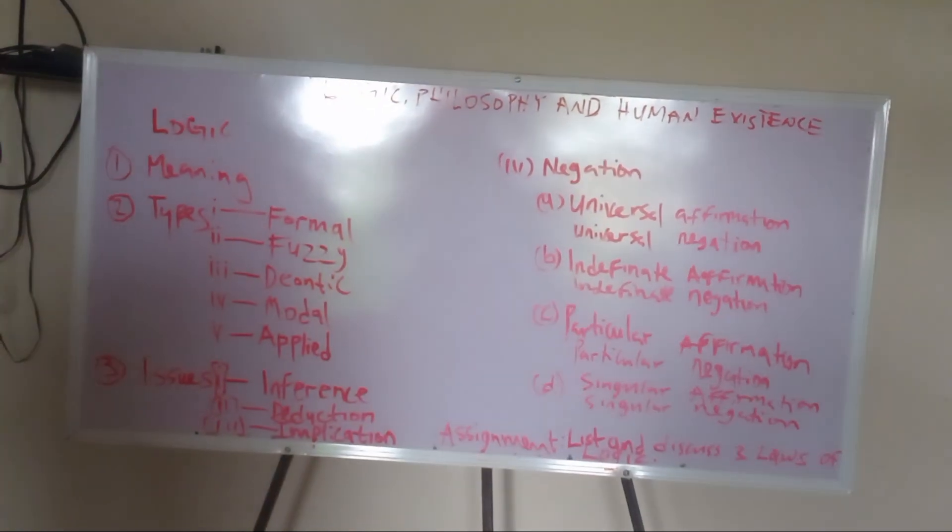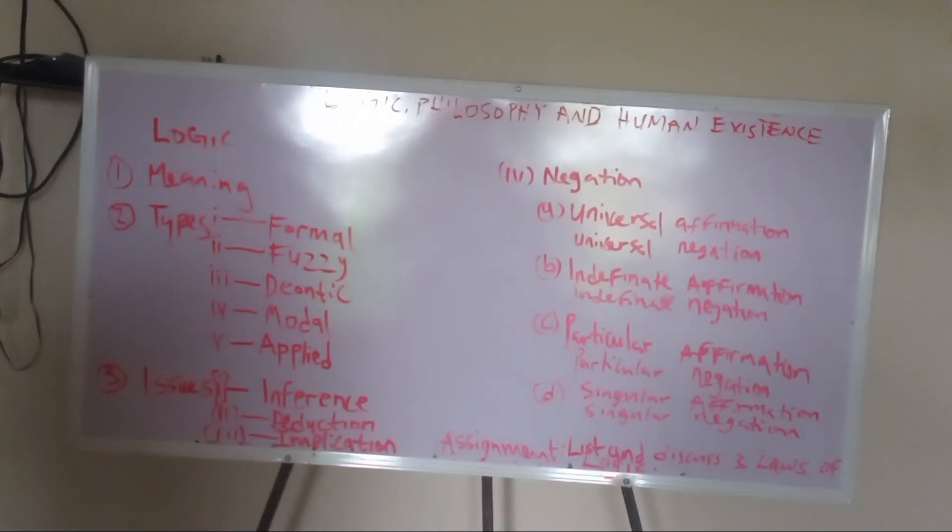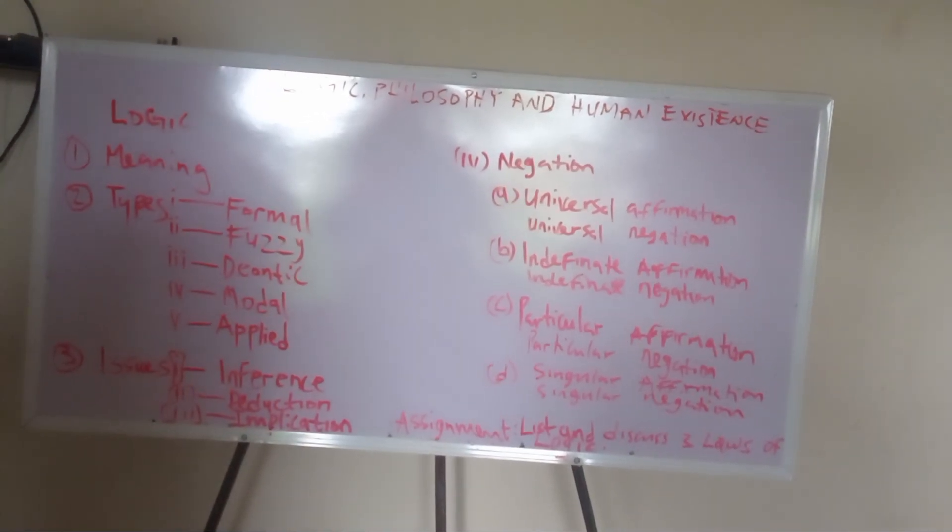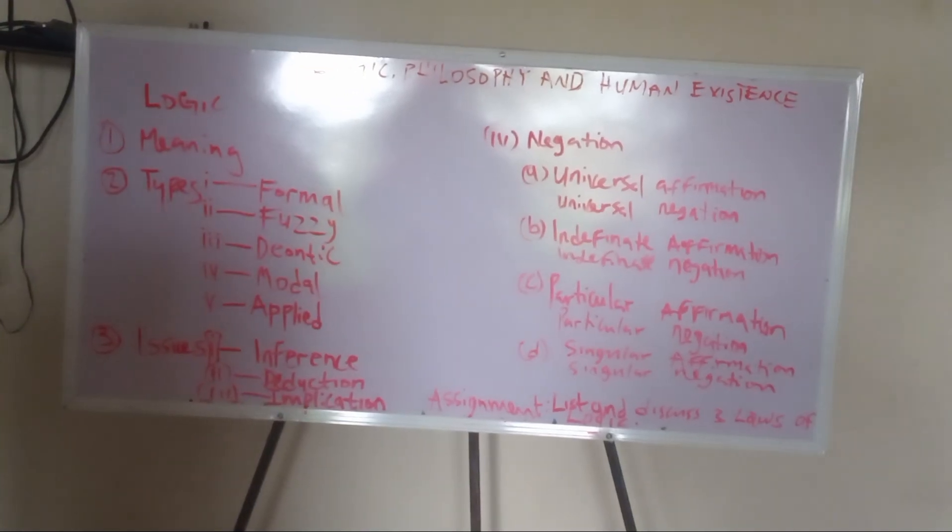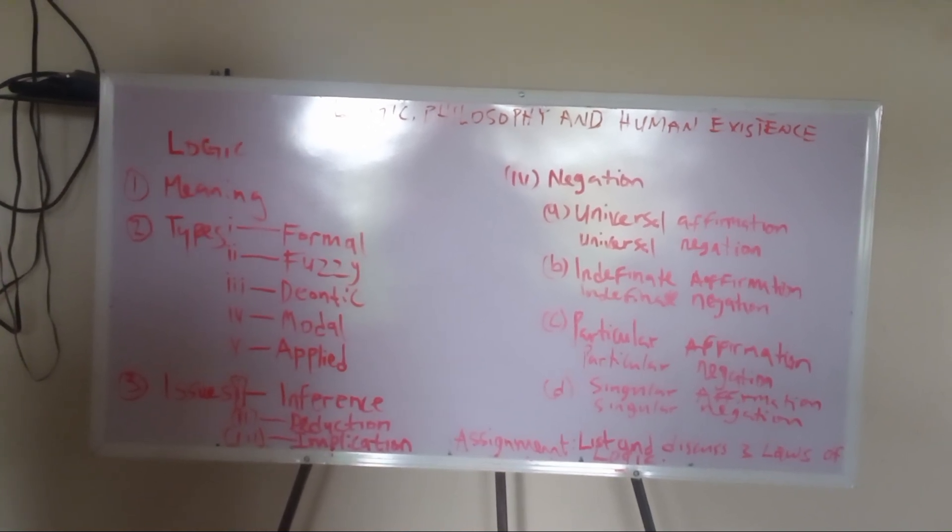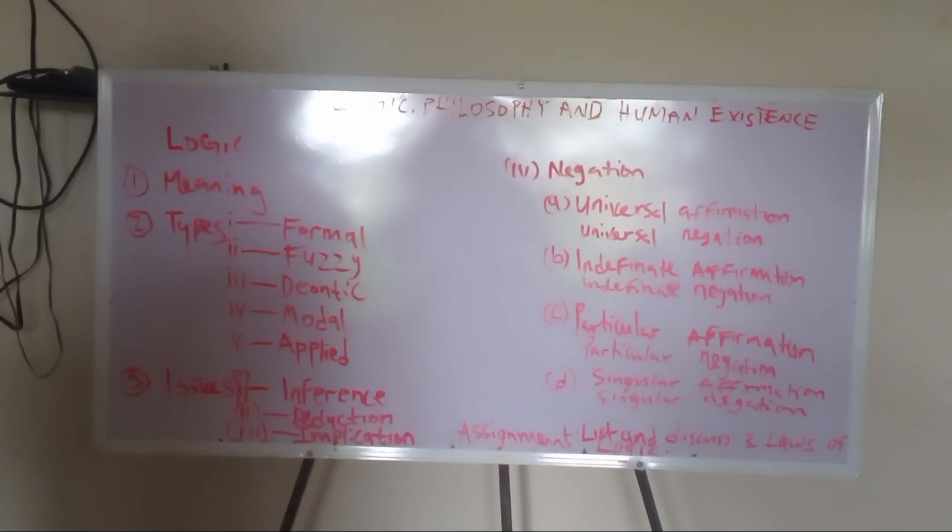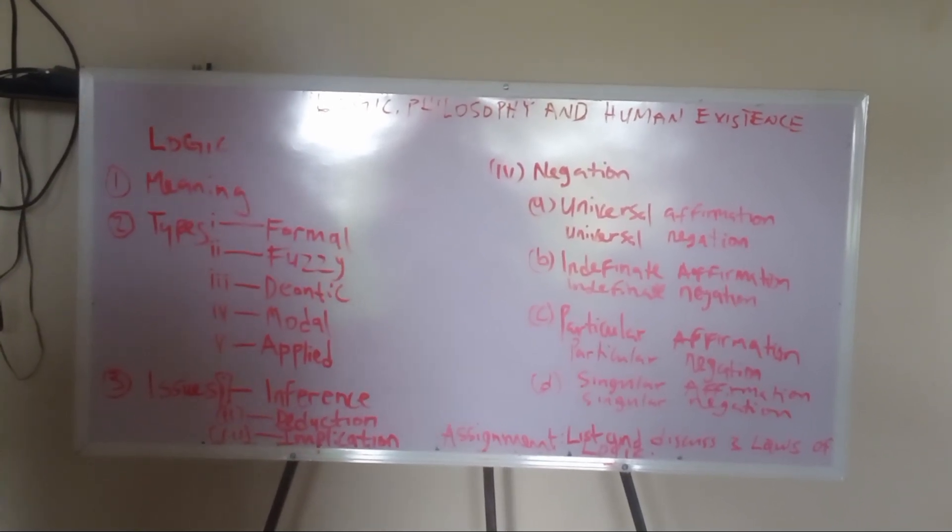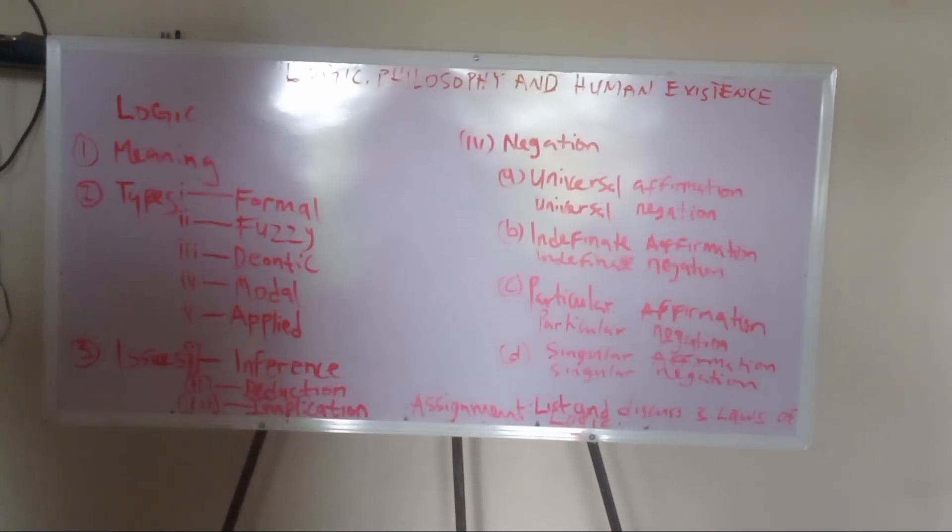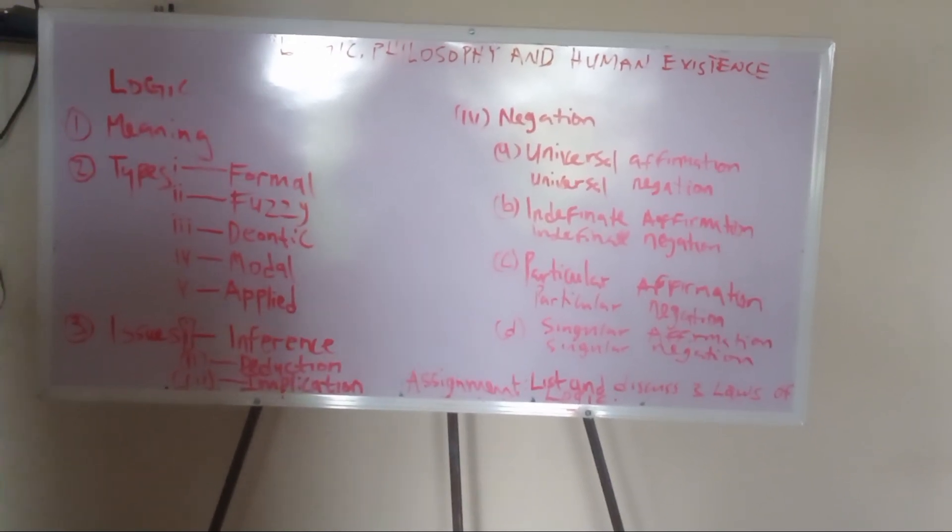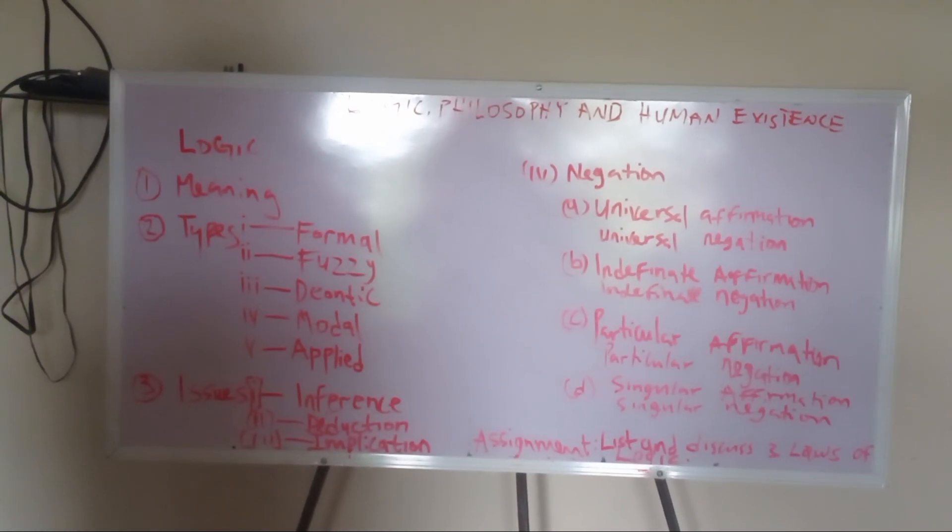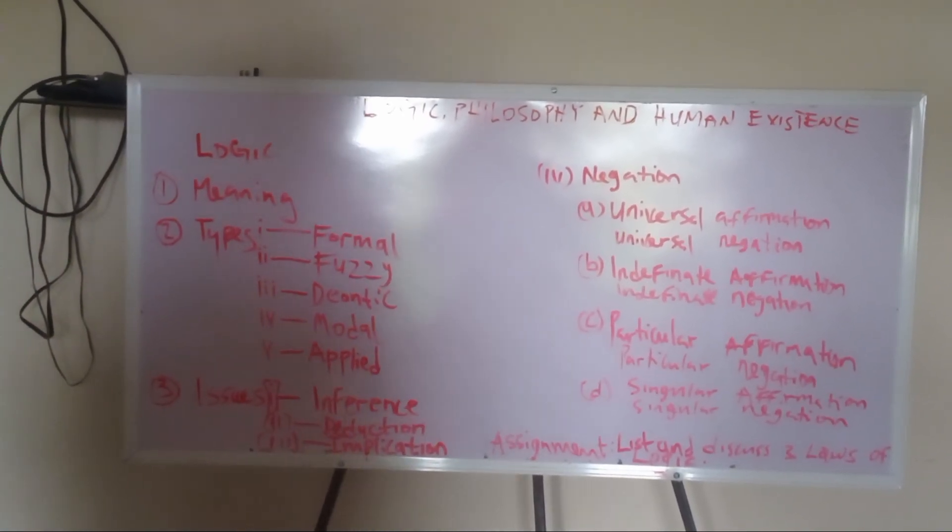The assignment for this particular video, which you have to do and submit in the comment section, is list and discuss three laws of logic. Yes, we have some laws of logic. List and discuss. Let me give you a clue, so you will not make mistakes. The first is law of contradiction. The second is law of excluded middle. The third is principle of identity. I've listed them out, so discuss them in the comment section. Once you do that, you have some points accrued to yourself. Thank you for listening. Make sure you engage, you share, and you like, then you comment. Thank you. We'll meet again in the next class. God bless you.